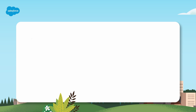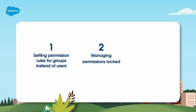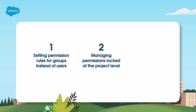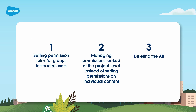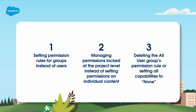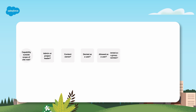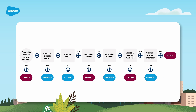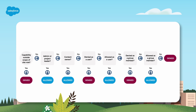To help keep things as straightforward as possible, we recommend: first, setting permission rules for groups instead of users; second, managing permissions locked at the project level instead of setting permissions on individual content; and third, deleting the all user groups permission rule or setting all capabilities to none. Permissions in Tableau are restrictive — unless a capability is granted to a user, they are denied permission. This logic is followed to evaluate if a capability is allowed or denied for an individual.